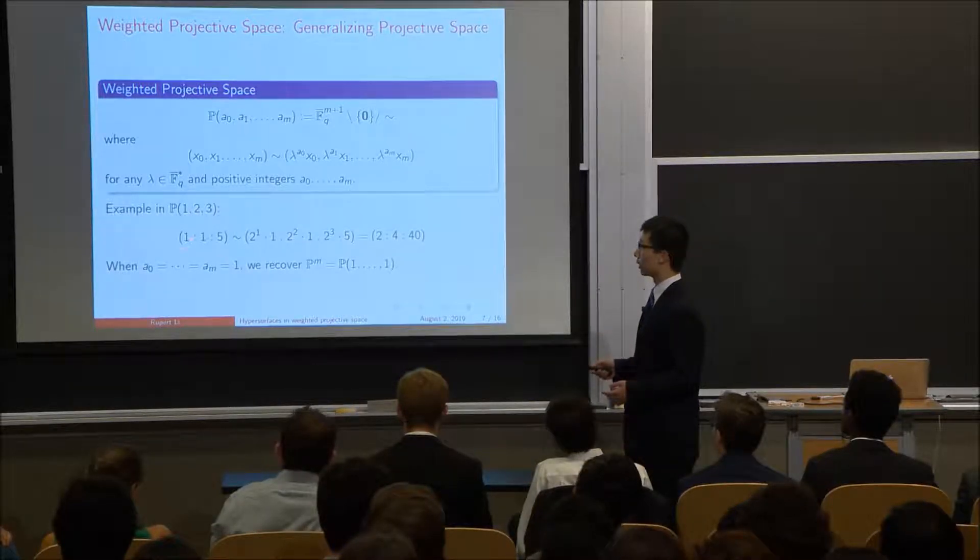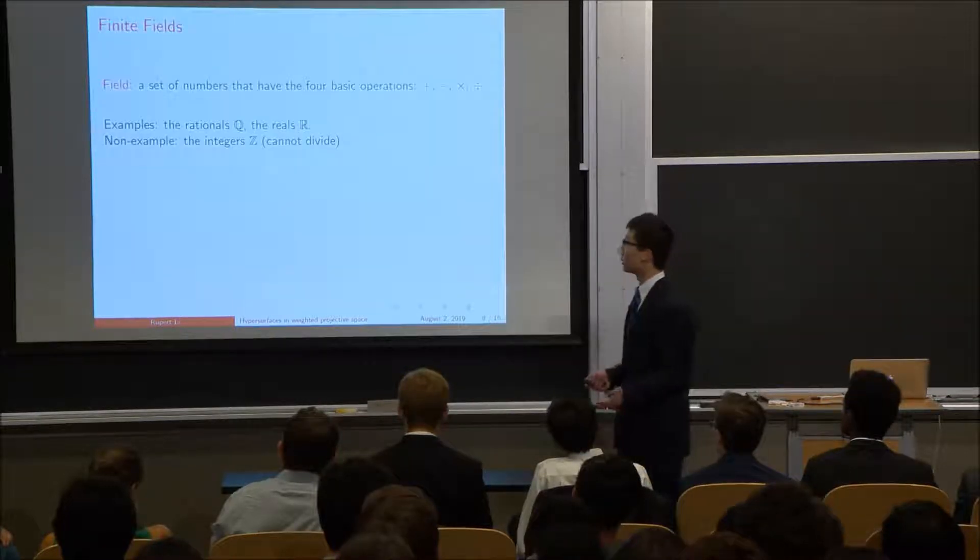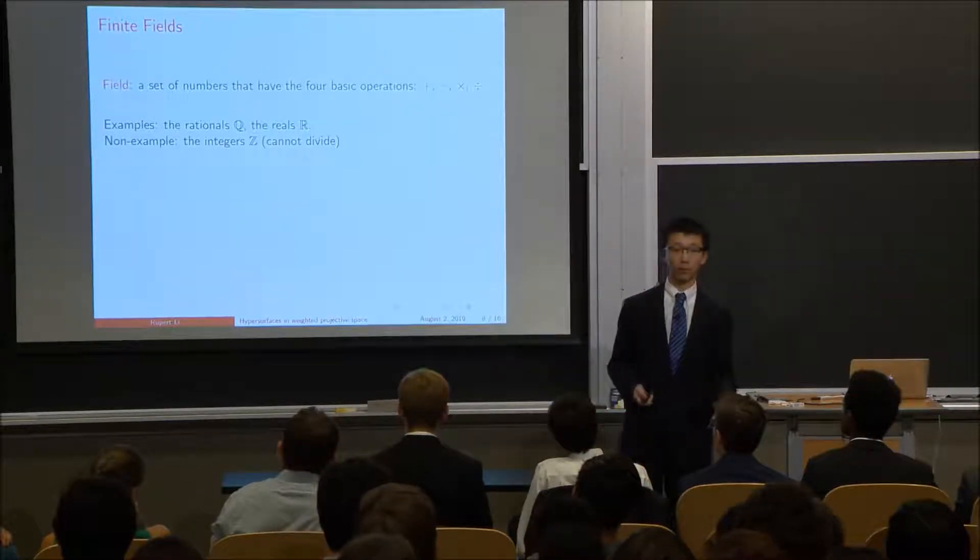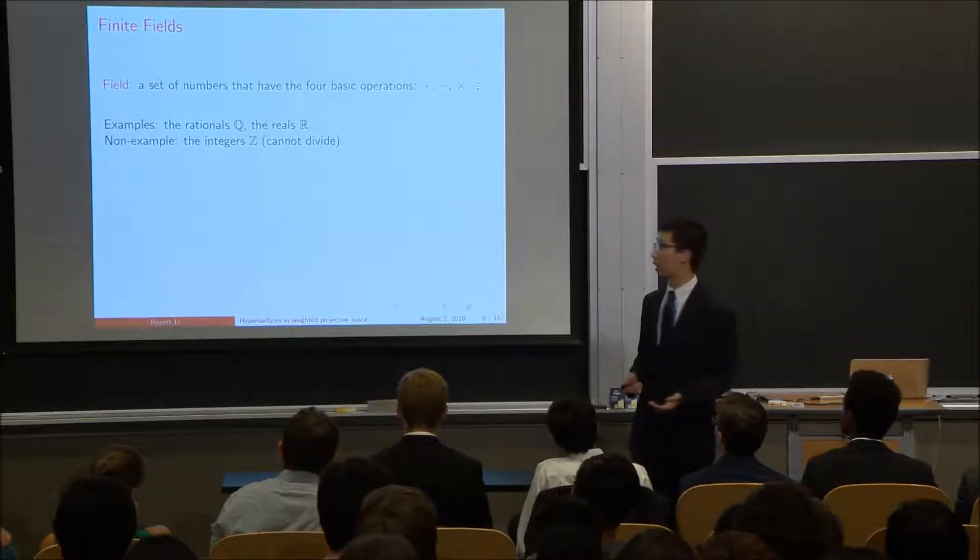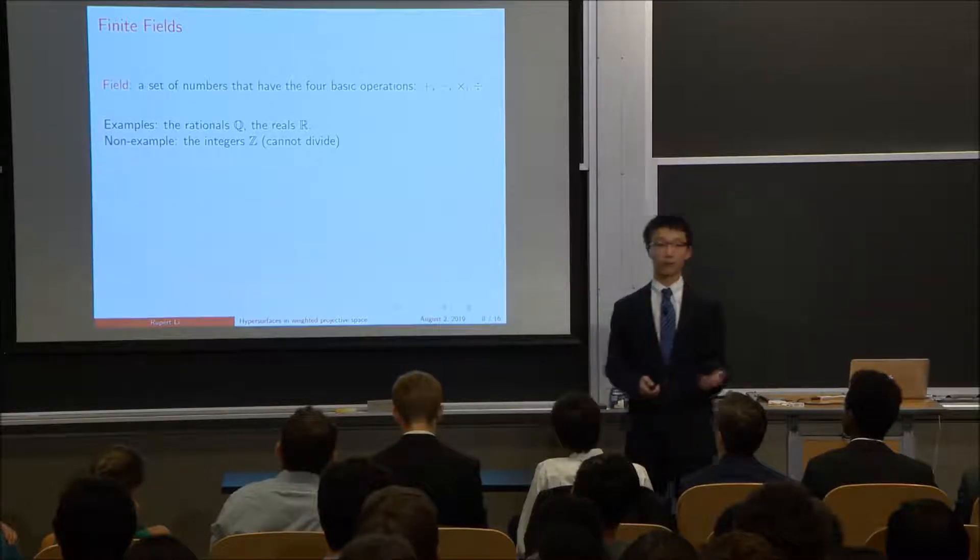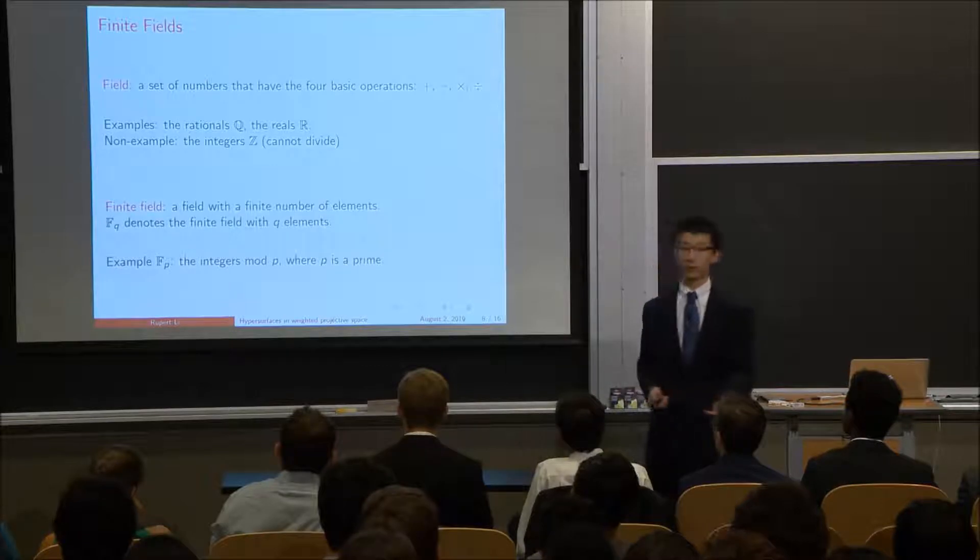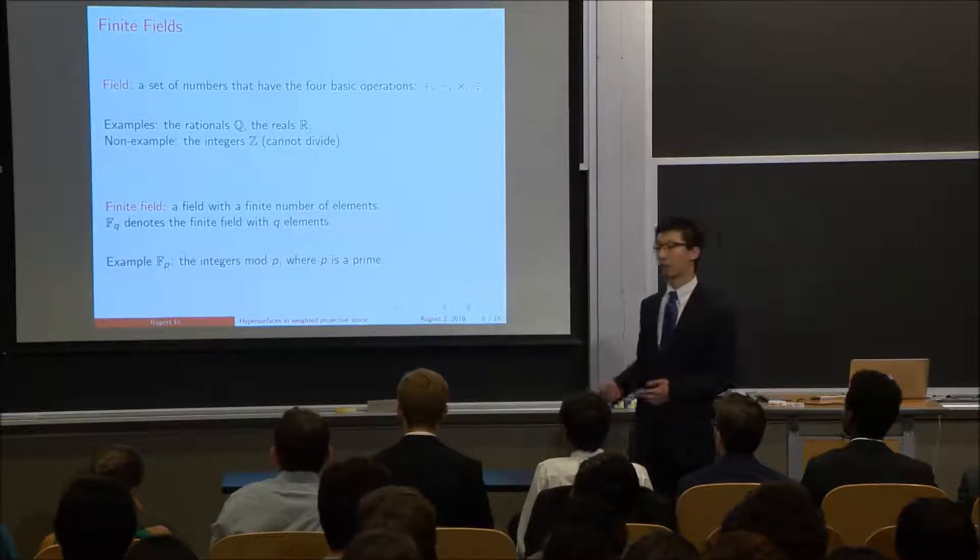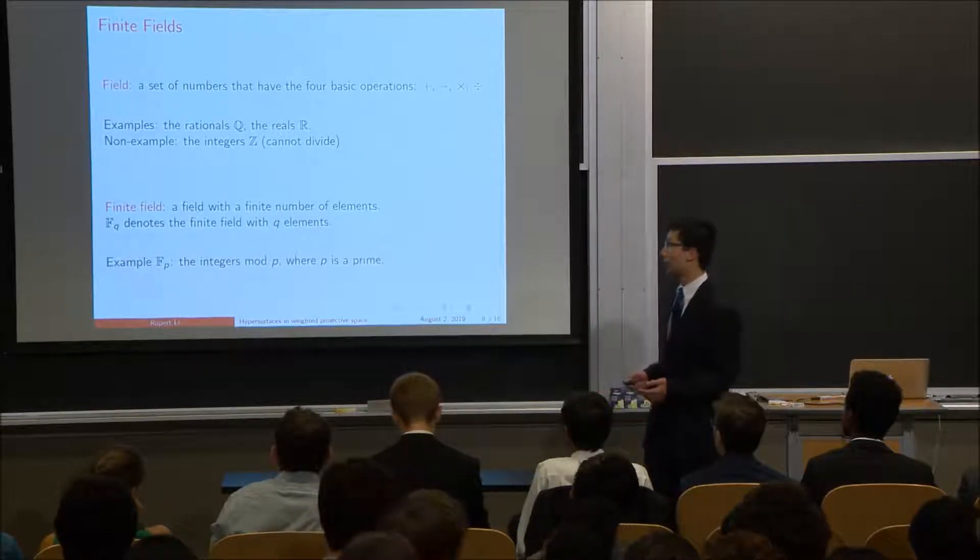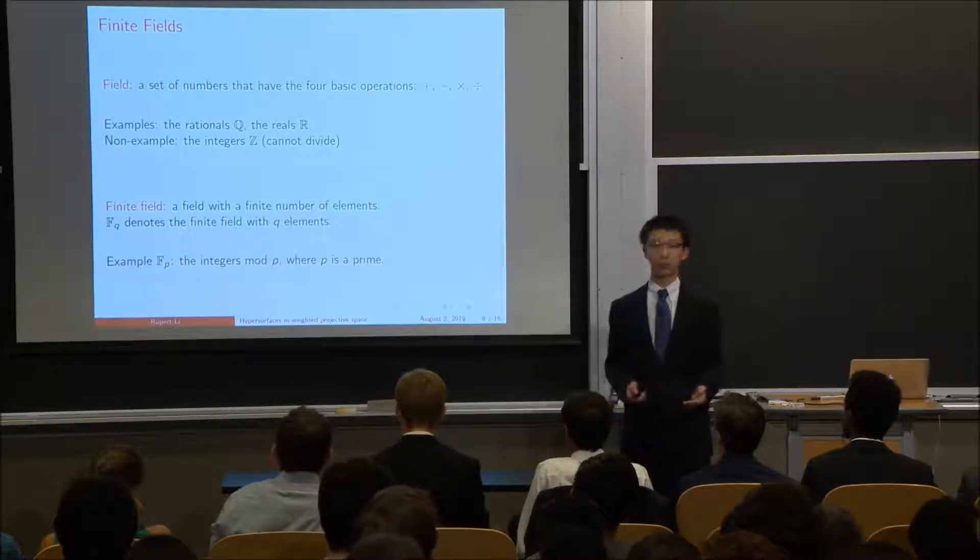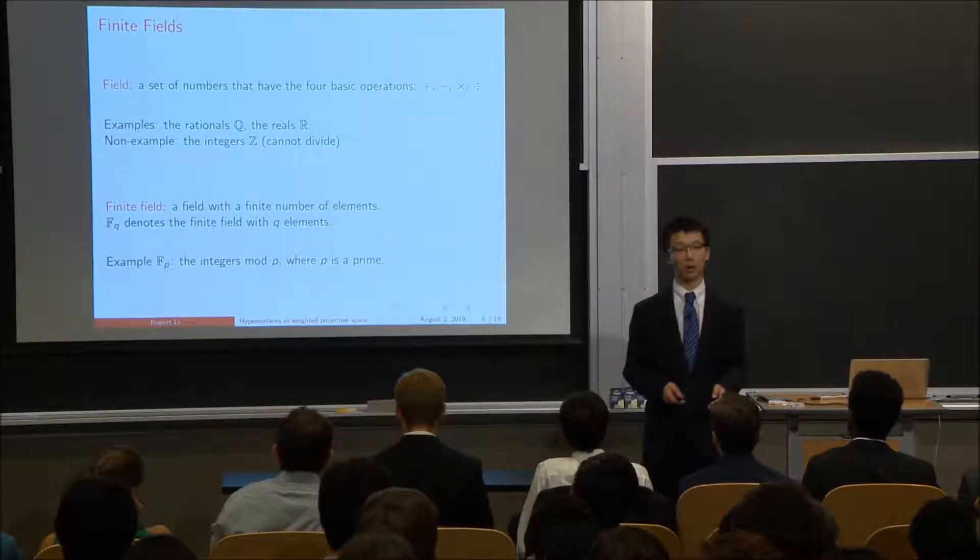In my project, however, the numbers that I use aren't going to be integers. They're going to be elements of a finite field. So a field is a set of numbers that have the four basic operations. And examples of those are rationals and the reals, as we're used to. A non-example is the integers, because, for example, 5 divided by 2 is not an integer anymore. A finite field is just a field that has only a finite number of elements. And if it has q elements, we'll denote it fq. An example of a finite field is fp, where p is a prime. And that's just the integers mod p. So performing modular arithmetic, so always taking a remainder mod that prime.